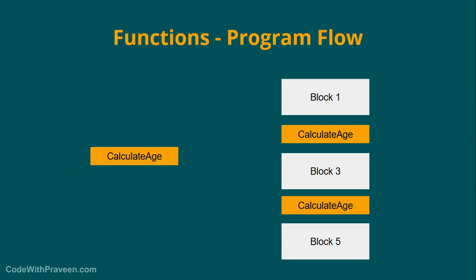Let us see the program flow of a function. In this example we have considered 'calculate age' as the function name. We assume that this function defines a series of instructions to calculate age. As we said before, once we define the function once, you can call this function any number of times in your source code or program.